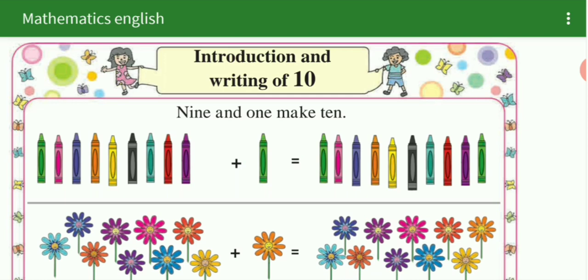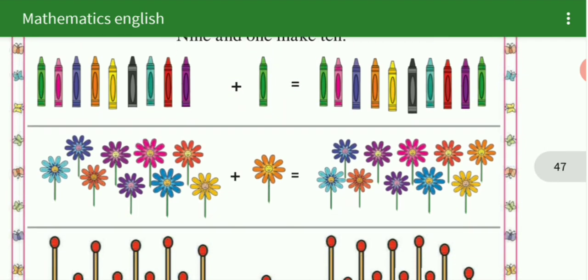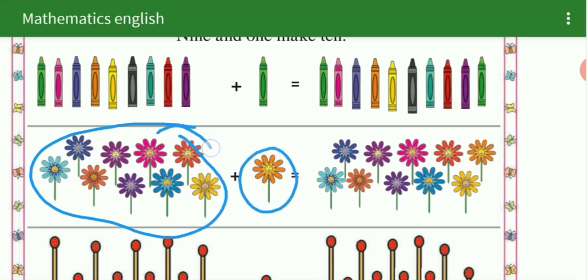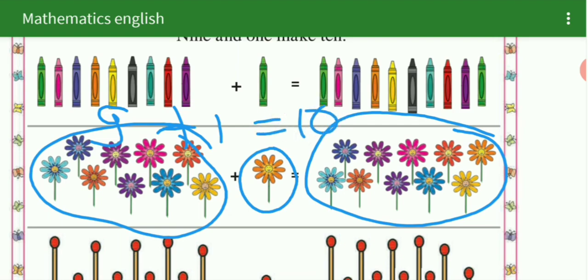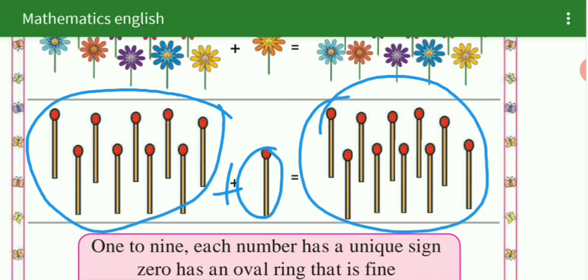See here 9 and 1 make 10. 9 plus 1 is equal to 10. 9 color crayons plus 1 color crayon is equal to 10 color crayons. See here 9 flowers plus 1 flower is equal to 10 flowers. See here 9 matchsticks plus 1 matchstick is equal to 10 matchsticks. 9 plus 1 is equal to 10.